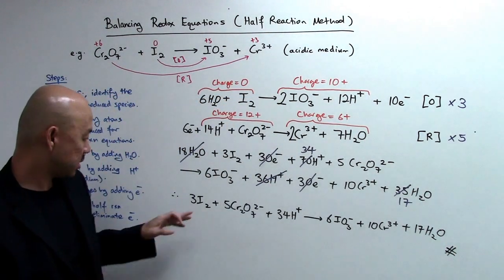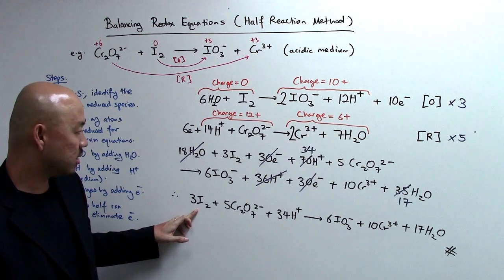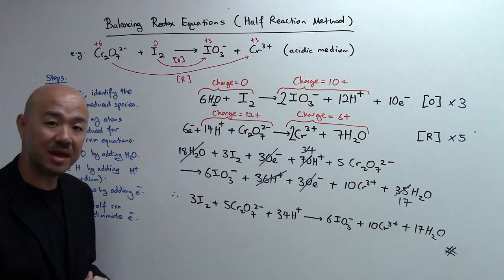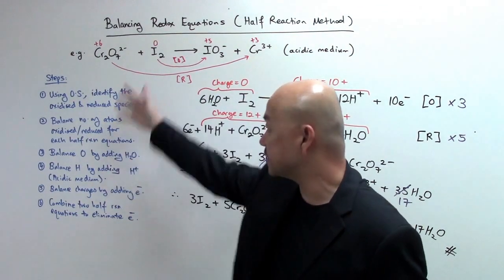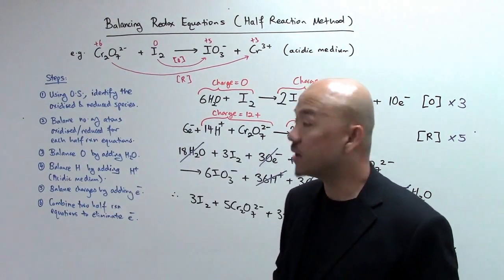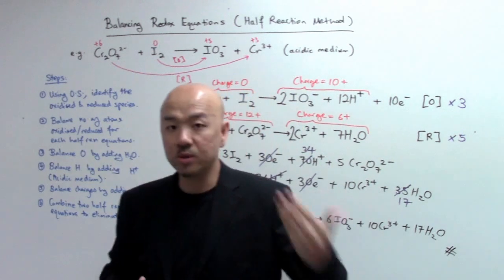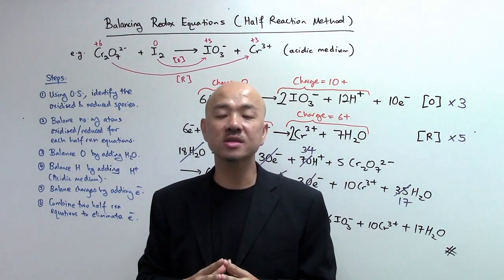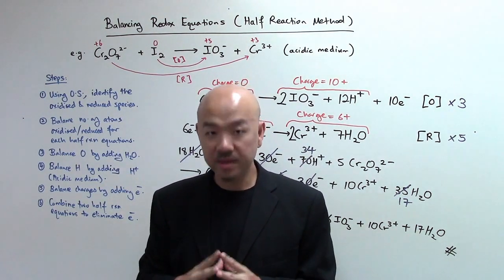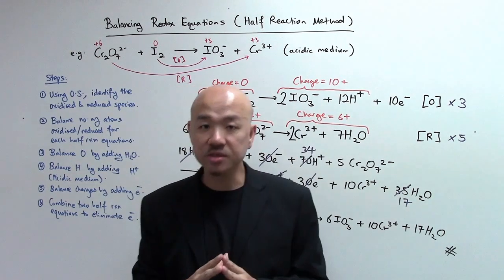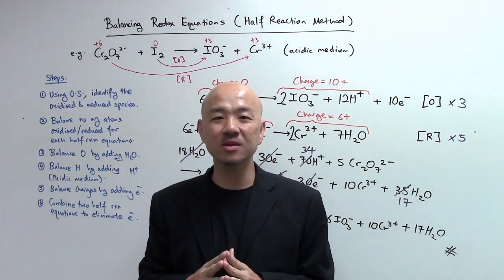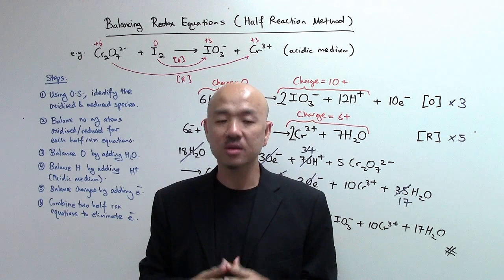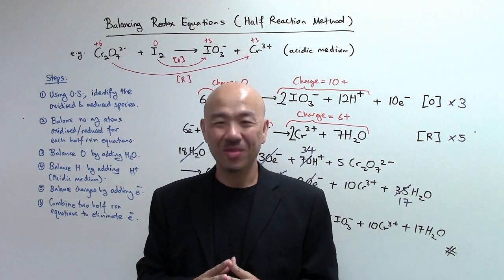Can we simplify it further? If not, this should be your final equation. This is the half reaction method. Take a look at the steps and procedures of what we have done — this is in acidic medium, that's why we add H⁺. In the next video, I'm going to show you how to balance redox equations in alkaline medium using the half reaction method again. Hope you enjoy yourself and learn something useful. Feel free to rewind and review it again, as well as to share this with your friends who need help in balancing redox equations. Thank you, and I'll see you in the next video.